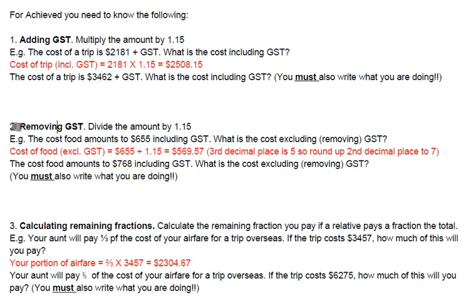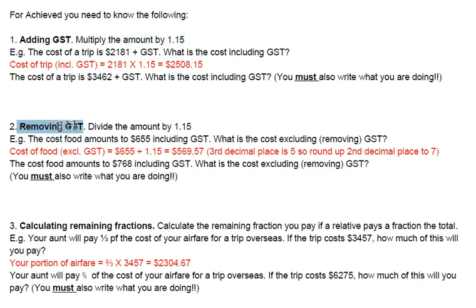Removing GST, number 2. Well, this is just the opposite — the reverse of what we did in number 1. In number 1, we assumed we did not have any GST, needed to add it, and multiplied by 1.15. Here for number 2, we already have GST in there, so we're going to divide by 1.15.